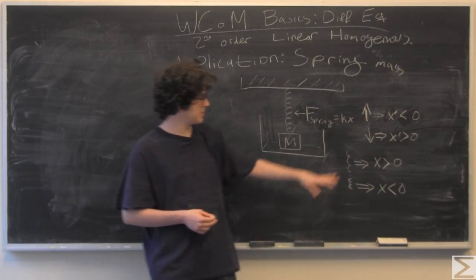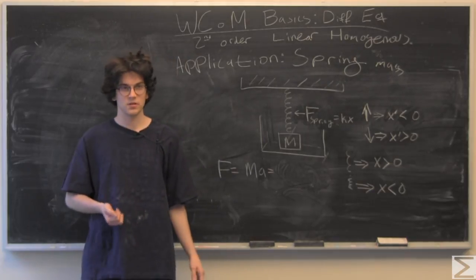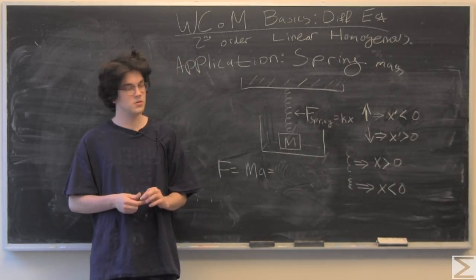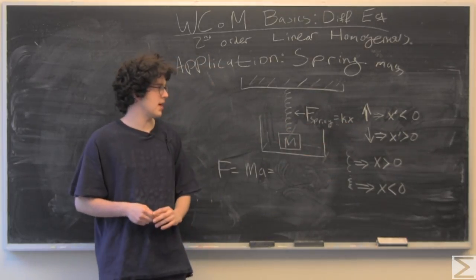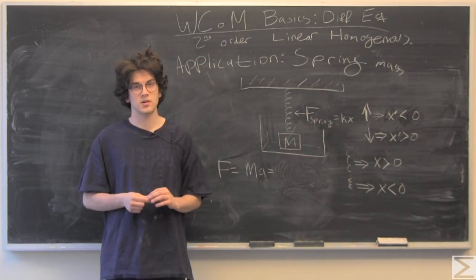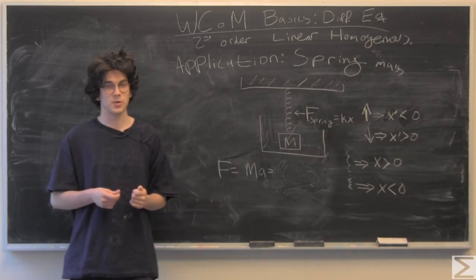A couple things to keep in mind for conventions: an upward velocity means that x prime is less than zero. A downward velocity means x prime is greater than zero.